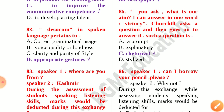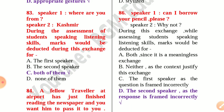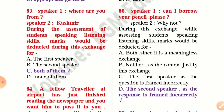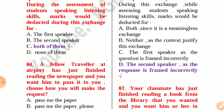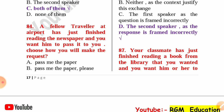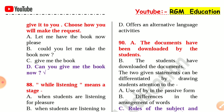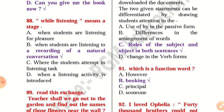Question 88: Churchill asks 'What is our aim?' and answers 'I can answer in one word — victory.' Such a question is rhetorical. Question 86: Speaker 1 asks 'Can I borrow your pencil please?' and Speaker 2 replies 'Why not?' During assessment of speaking and listening skills, marks would be deducted for the second speaker as the response is framed incorrectly. Question 87: Your classmate has just finished reading a library book you wanted — the correct request is 'Can you give me the book now?' Question 88: While listening means a stage recording of a natural conversation.